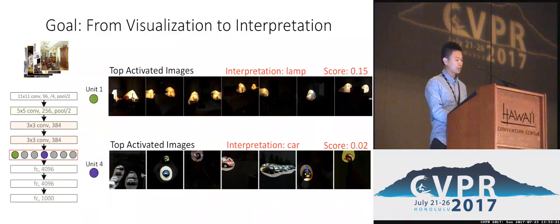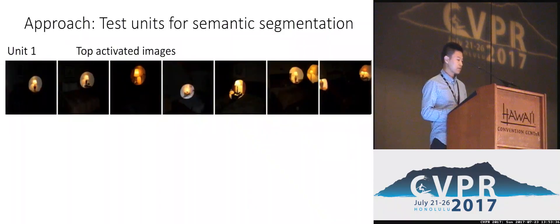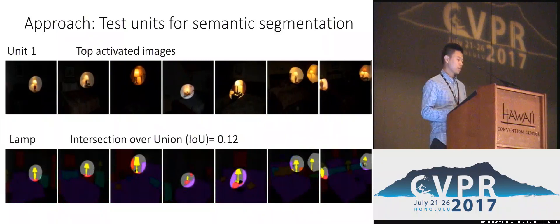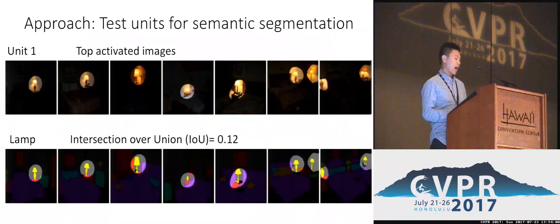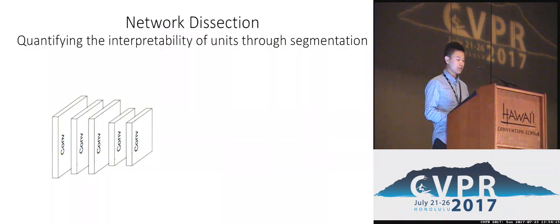Our approach is simple. We consider each unit as a concept detector, then evaluate each unit for semantic segmentation. Given the top activated images for a unit, we use the feature map to segment those images and get the most activated image regions. Assuming we have pixel-wise annotations for each image, we use the feature map to segment the semantic segmentation mask, then count how many ground truth pixels have been correctly segmented. We associate a label for each unit, and to evaluate accuracy we use intersection over union. This is network dissection — a general framework to quantify the interpretability of units through semantic segmentation.